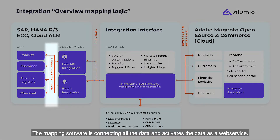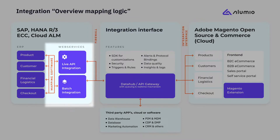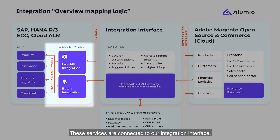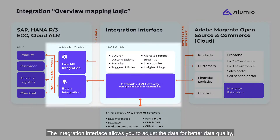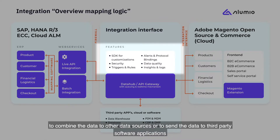The mapping software is connecting all the data and activates the data as a web service. These services are connected to our integration interface. The integration interface allows you to adjust the data for better data quality, to combine the data with other data sources, or to send the data to third-party software applications.